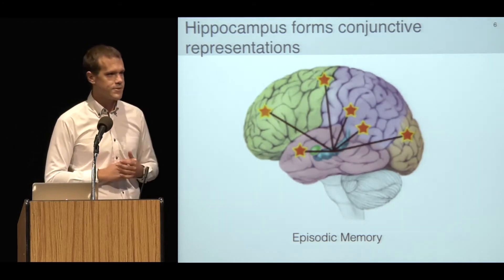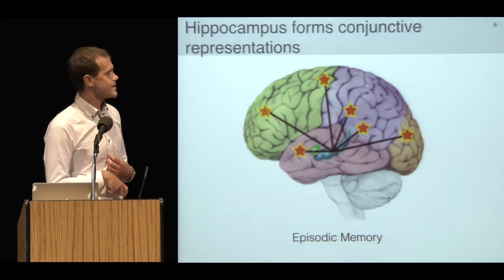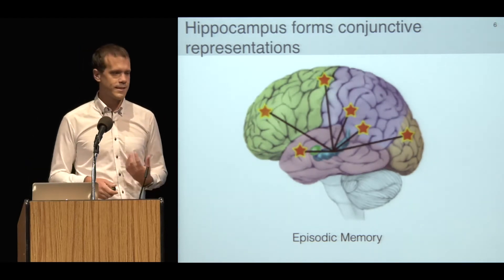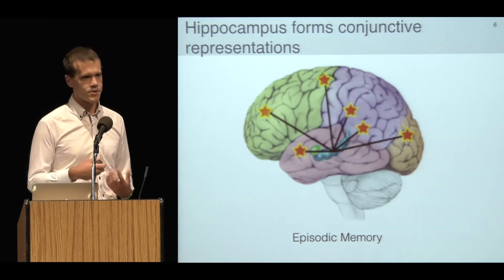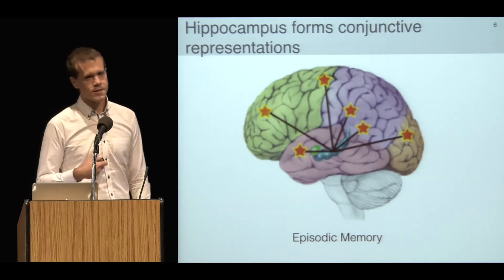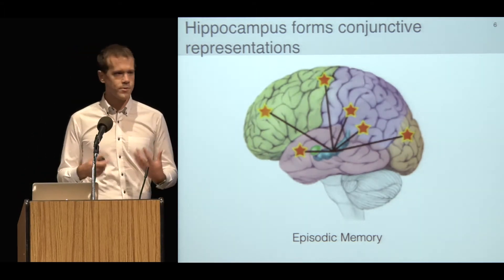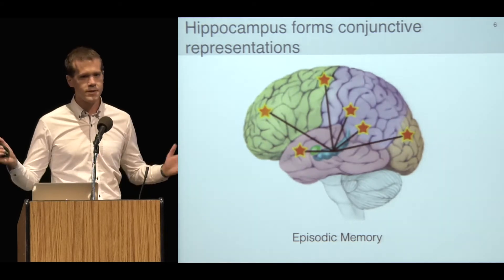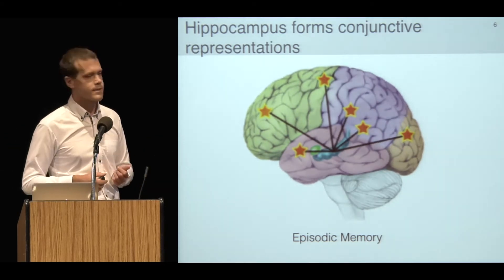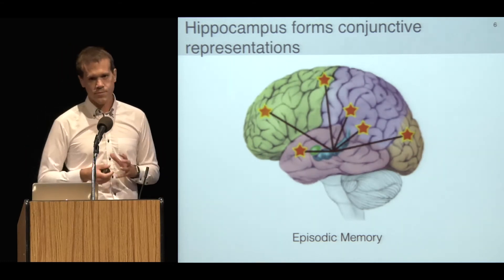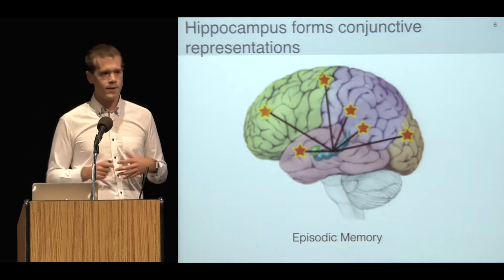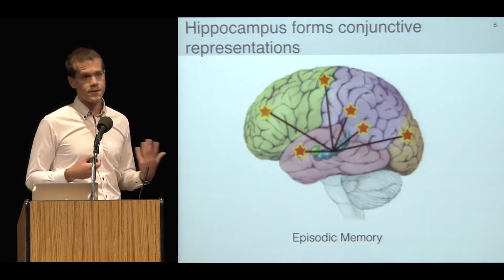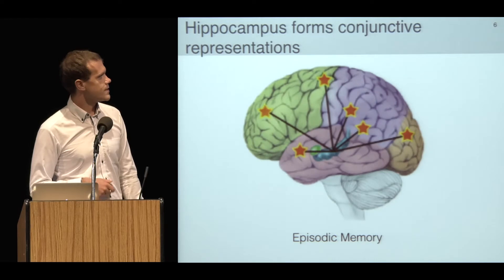The model for how this occurs is that the hippocampus has unique physiological and circuit properties that endow it with this ability to form rapid conjunctions of arbitrary sets of features that are represented out in cortex. Not only can it form these conjunctions, but it can keep very similar conjunctions separate. This function is called pattern separation, actually coined by Marr back in the 70s.